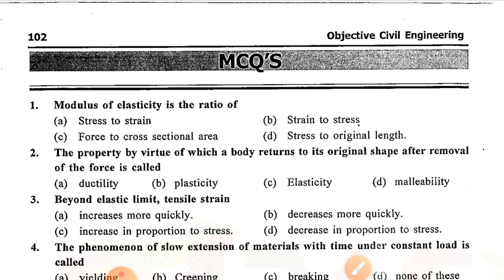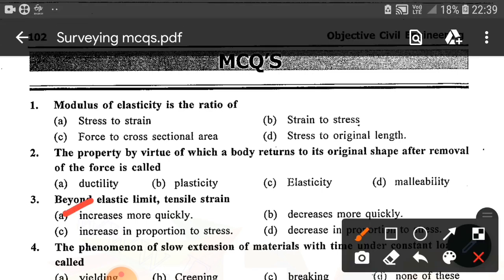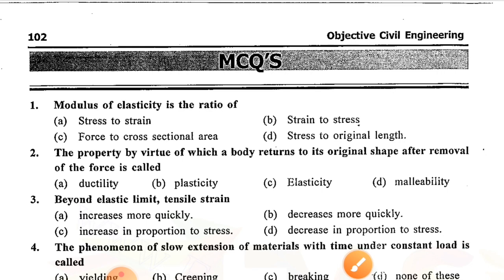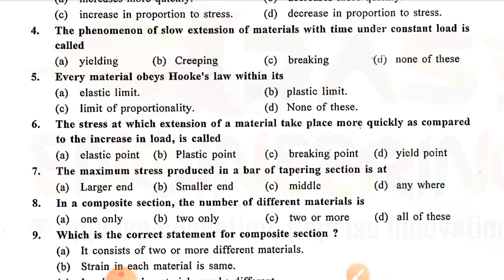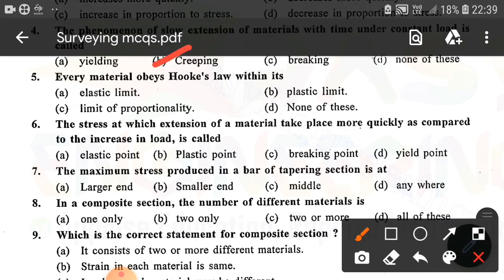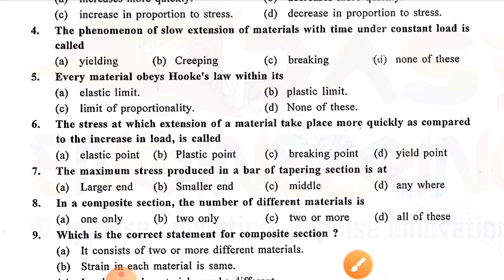Question number three: Beyond elastic limit, tensile strain — option A is correct — increases more quickly. Question number four: The phenomenon of slow extension of materials with time under constant load is called — option B is correct — creep. Question number five: Every material will be elastic within its — option C is correct — limit of proportionality.